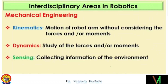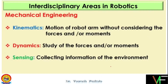In the mechanical regime, we have kinematics. In kinematics, we basically deal with the motion of the robot arm without considering the forces. So motion, position, and orientation — these are the three key words.